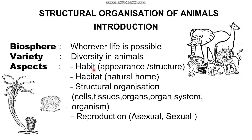First, habit — their appearance, structure differ. That is habit. Habitat is where organisms live — their natural home. A cell can be on land, a cell can be in water. That is habitat.